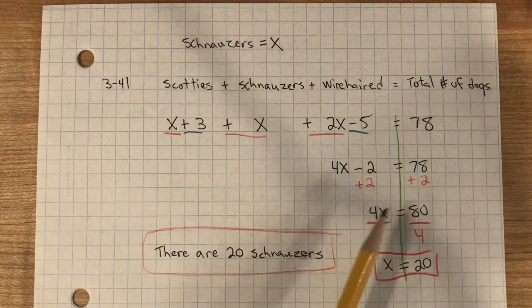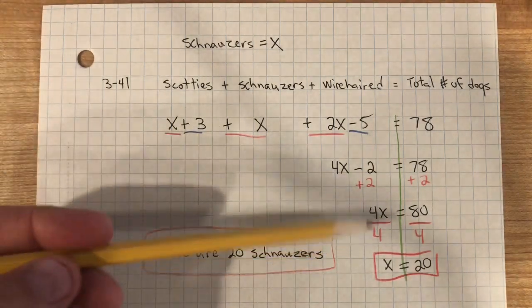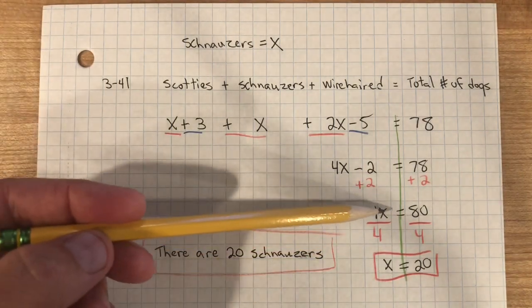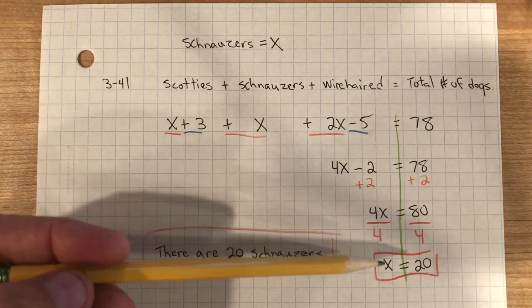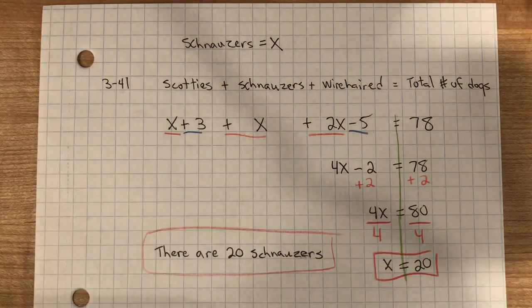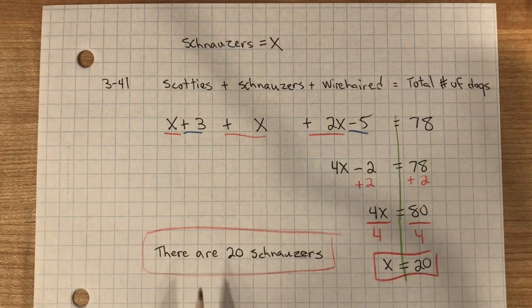4x equals 80. I want to create the identity property, the giant 1, so we divide both sides by 4, and we get x equals 80. I'm sorry, x equals 20. So, there are 20 Schnauzers.